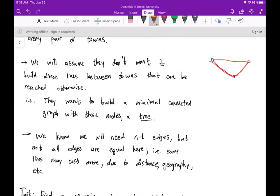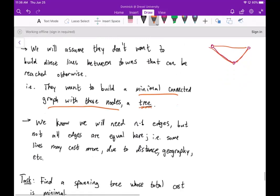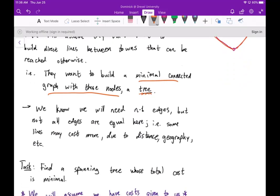So in graph theory context, they want to build a minimal connected graph with these nodes, which of course is a tree. Now we know that we're going to need n minus one edges.